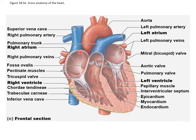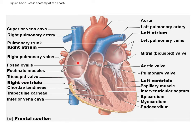On the right atrium: the fossa ovalis is that depression in the interatrial wall. Pectinate muscle is the name of the muscle making up the inner structure of the atria — pectinate means comb-like, they have a threading appearance. The tricuspid valve separates the right atrium from the right ventricle.